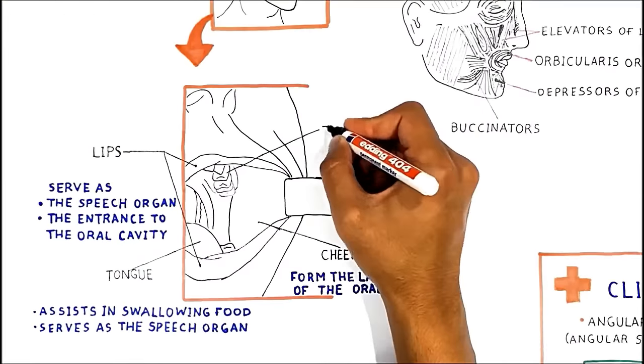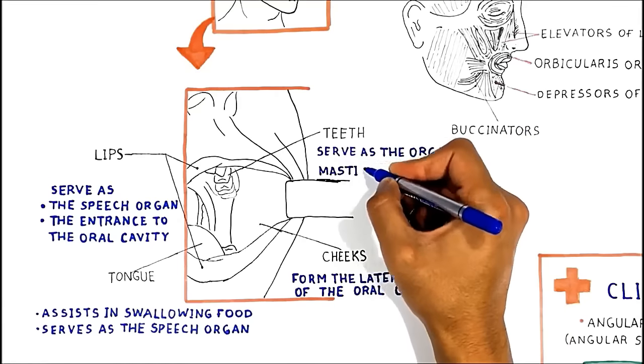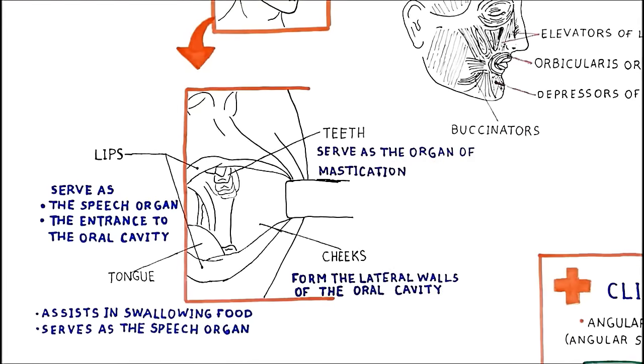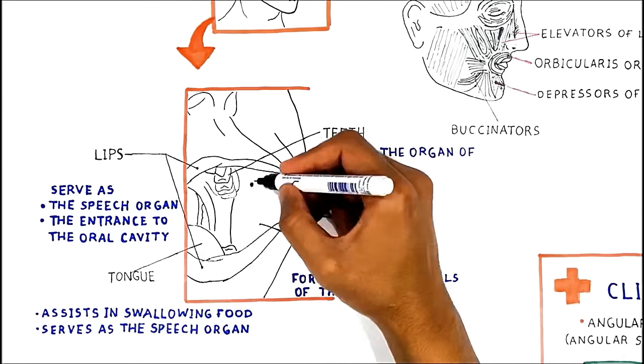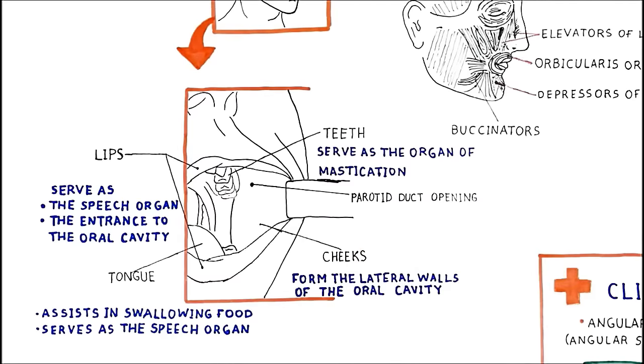Here are your teeth, they may be considered organs of mastication, in other words chewing, and also they mix the food with the saliva. The parotid duct openings are better seen here. It opens into the vestibule of the mouth at the parotid papilla, which lies across the second superior molar tooth.